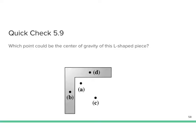Here's a quick check: which point could be the center of gravity of an L-shaped piece? The center of gravity is the point where all the mass of the object could be held so it would be perfectly balanced. The answer is point A, which is not actually on the object. The center of mass doesn't have to be physically on the object — like the center of mass of a roll of tape, which is in the empty middle.